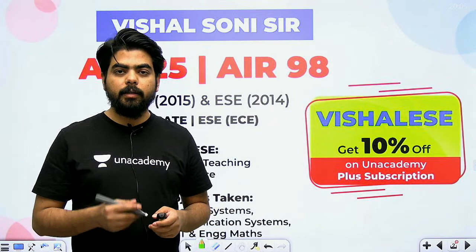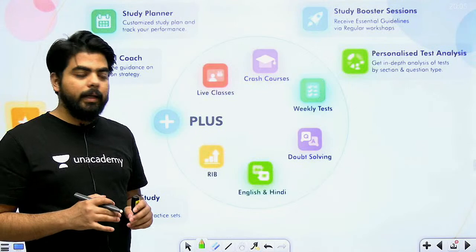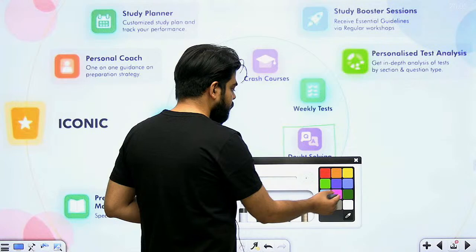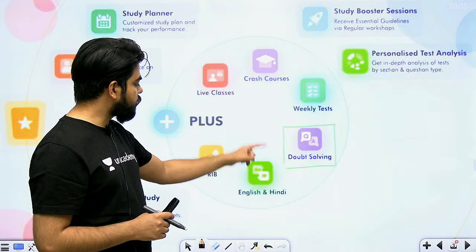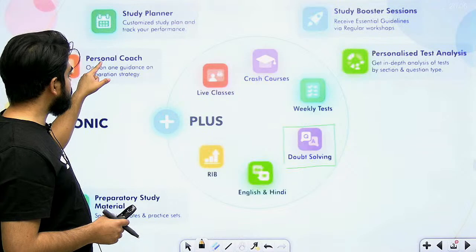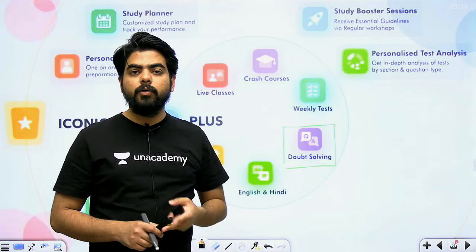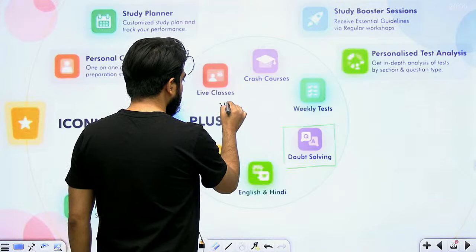उससे पहले बता दूं कि Academy Plus पर अभी एक बिल्कुल नया feature मिल गया है - वो है doubt solving के batches। पहले doubt solving sessions होते थे जो Plus के साथ included होते थे, लेकिन अब doubt solving batches भी मिल जाएंगे, उसके साथ live classes, crash courses, English और Hindi के batches, weekly tests। Iconic subscription में personal code, study planner, study booster sessions, test analysis, interview guidance program भी मिलता है। Plus users के लिए सबसे बड़ा game changer है personalization और doubt solving sessions।